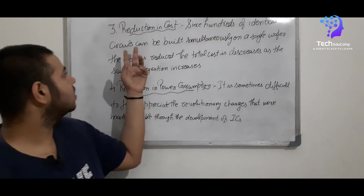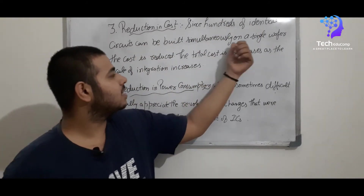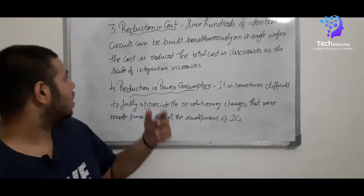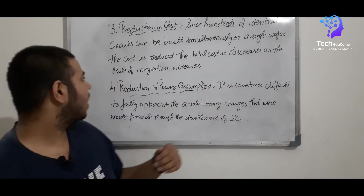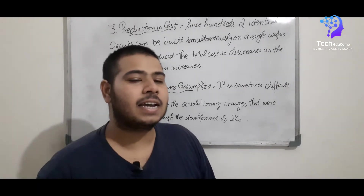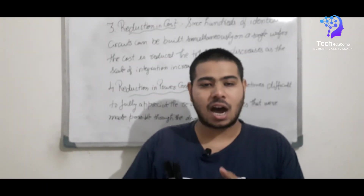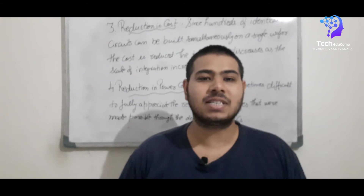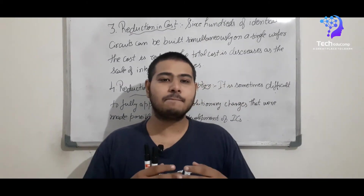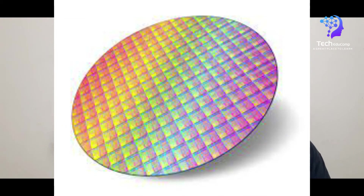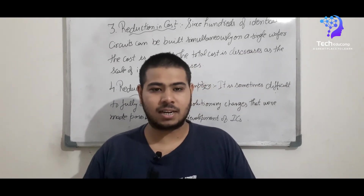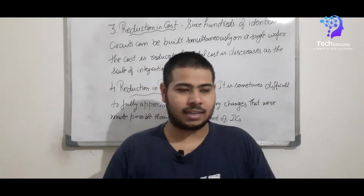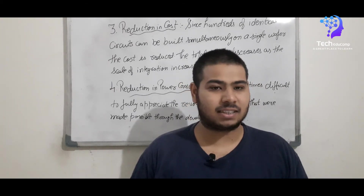Since hundreds of identical circuits can be built simultaneously on a single wafer, the cost is reduced and the total cost decreases as the scale of integration increases. The IECs which are made today cost less because they are made from a single silicon wafer. We can make many thousands of IECs using a single silicon wafer and connect many components on them using different methods.